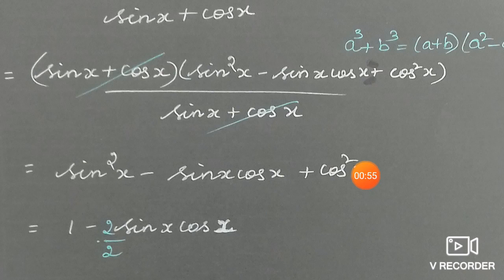Again, sin square x plus cos square x. It is an identity which is 1. So, we write 1 here, minus sin x cos x.